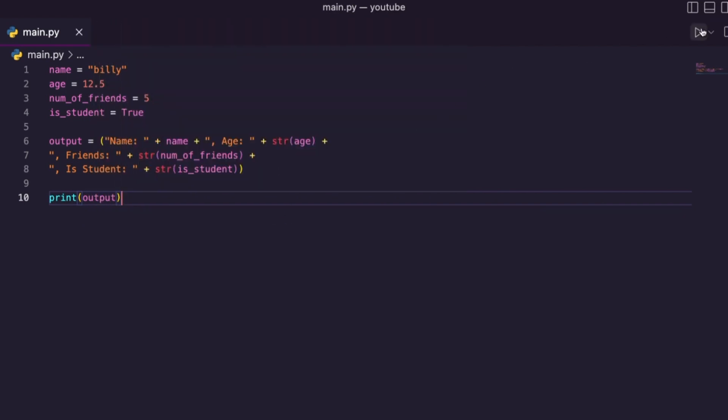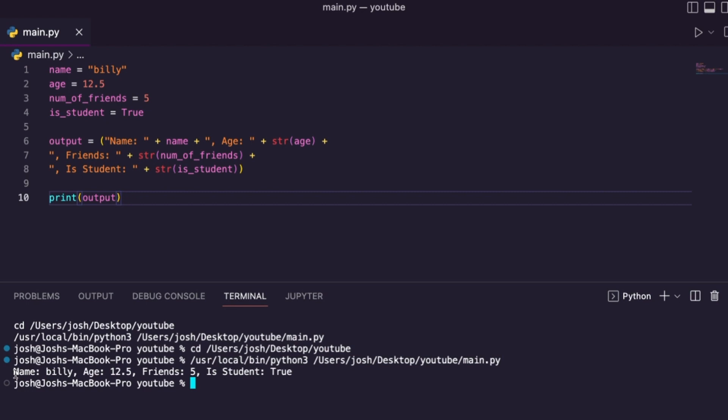Now that I have this, I'm going to go down and I'm just going to print off, let's say, output. Let me run my code. And there you go. Name, Billy, age, 12 and a half, friends, five, is student true. That's you playing around with variables, right? How many variables did you make? Change the values of these. All right. Pretty good. Let's check out the next part of what we're going to be talking about.